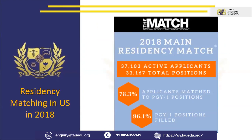Looking at 2018 data: there were approximately 37,000 active applicants who applied for residency, and the number of available PG residency seats was 33,000 — almost a 1:1 ratio. Compared to India, where it's almost a 1:3 or 1:4 ratio. 78.3% of applicants matched to PG year one positions, and 96% of PG year one positions were filled in 2018.